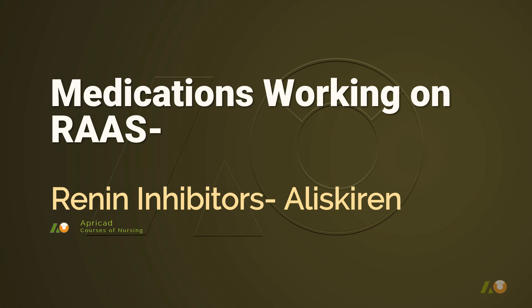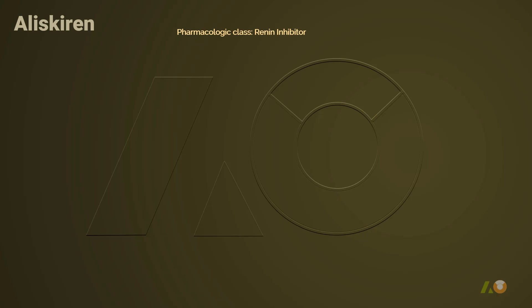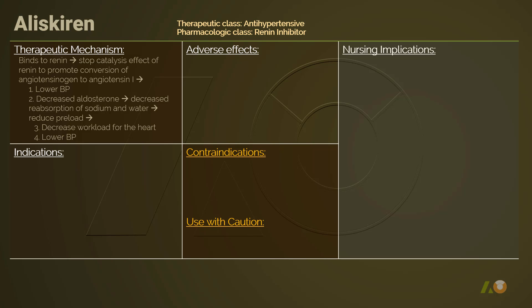In this lecture, we are going to go over aliskiren, the one and only direct renin inhibitor. Being a direct renin inhibitor, aliskiren belongs to the antihypertensive category. Aliskiren is the only available direct renin inhibitor. It binds to renin and stops renin from catalyzing the conversion between angiotensinogen and angiotensin 1. In other words, aliskiren stops the cascade at the very early stage, and it covers a rather full range of these chain reactions.